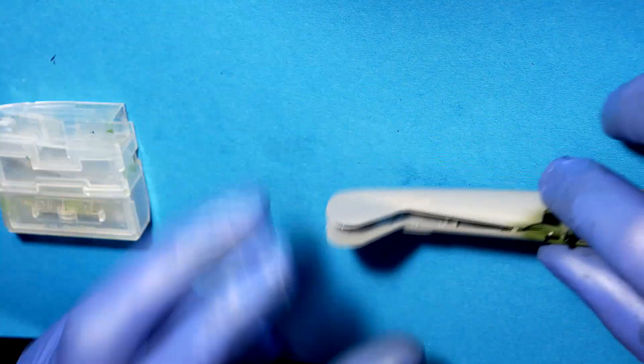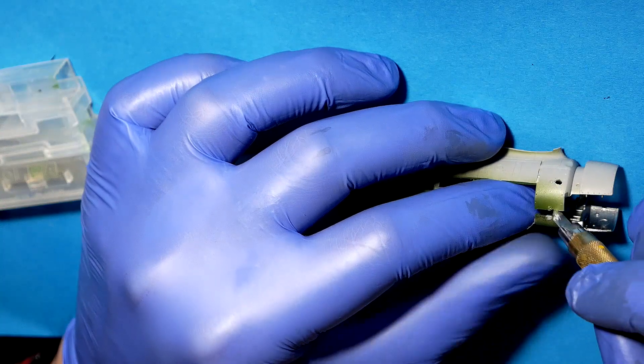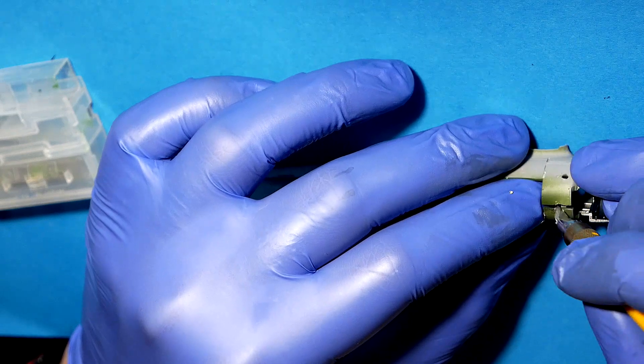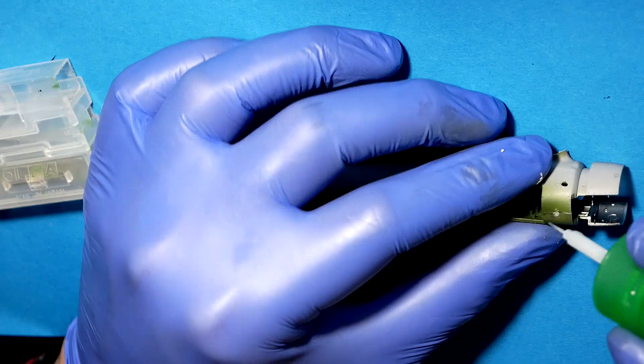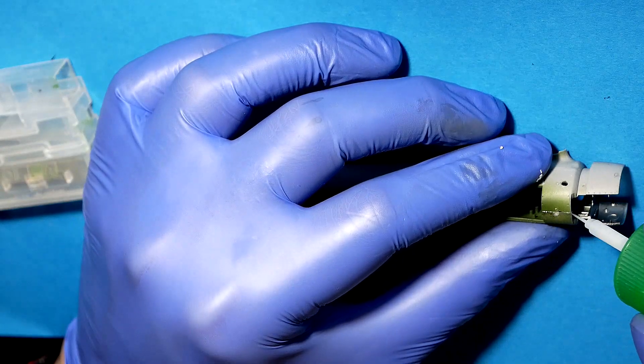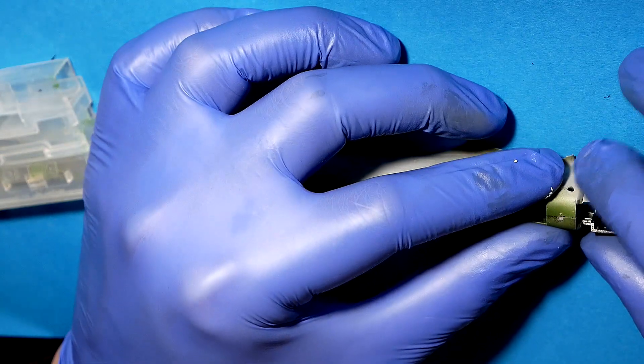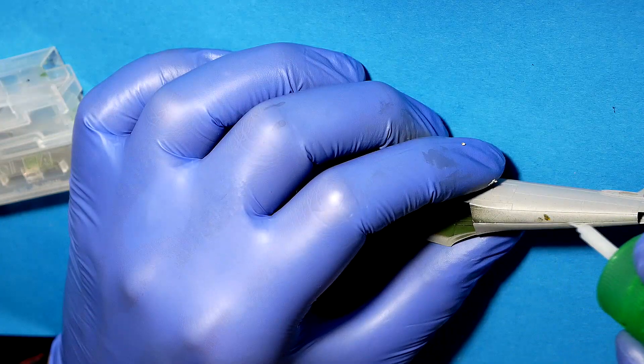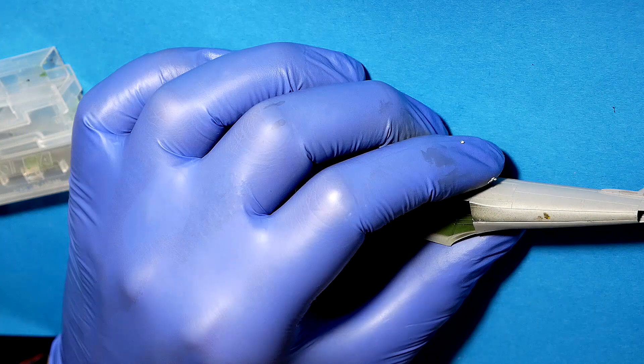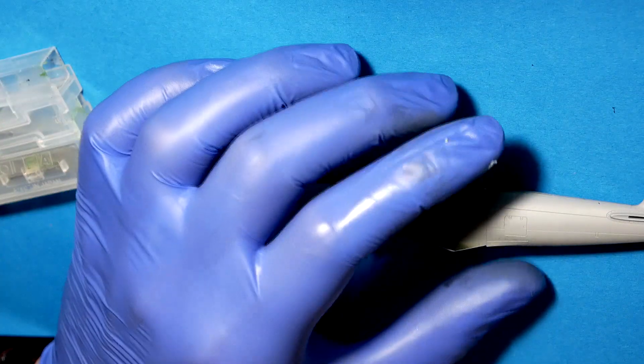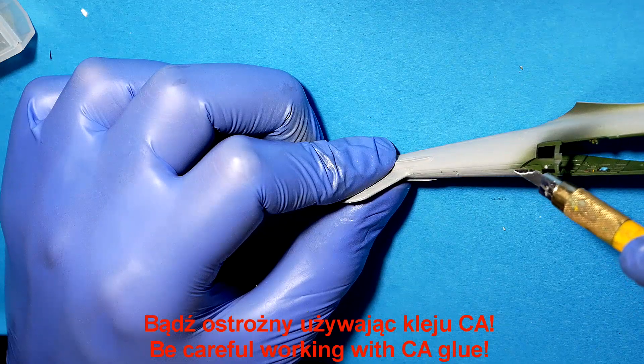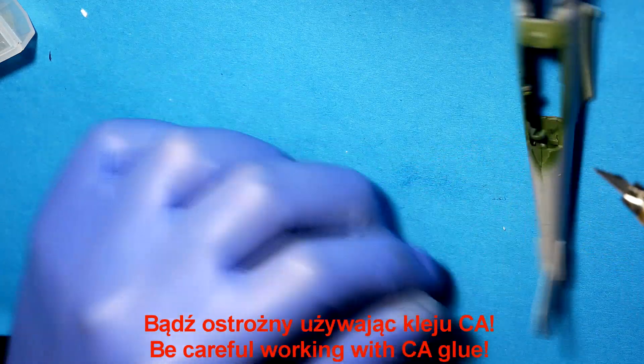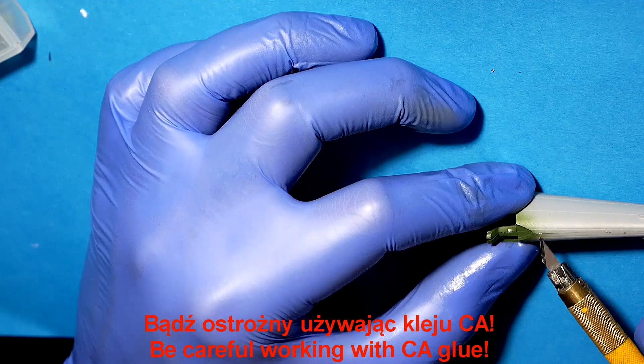The fuselage halves were connected and joining them together appears very nice. I used CA glue acting as putty.